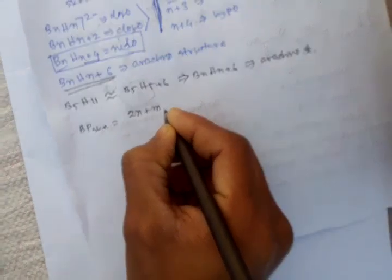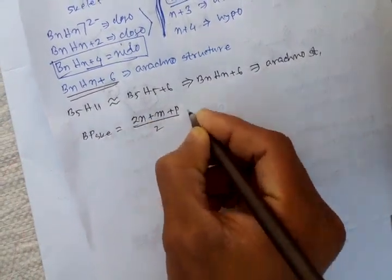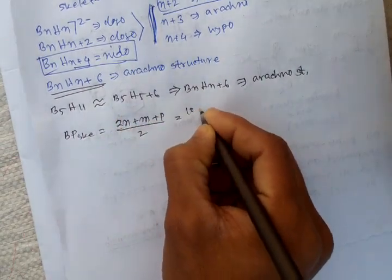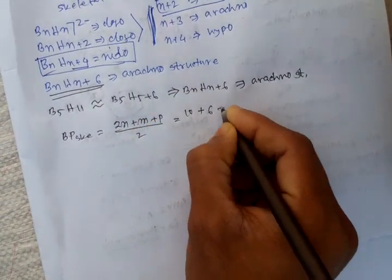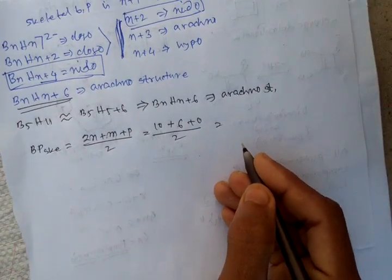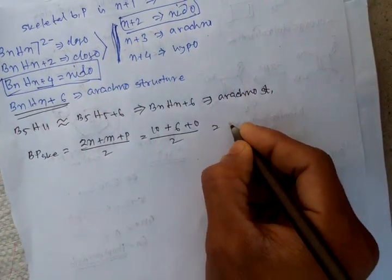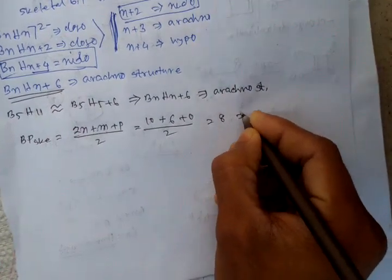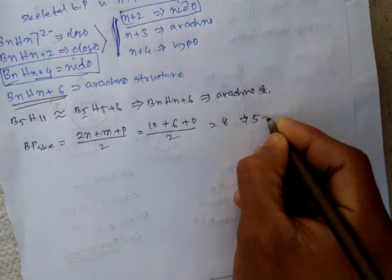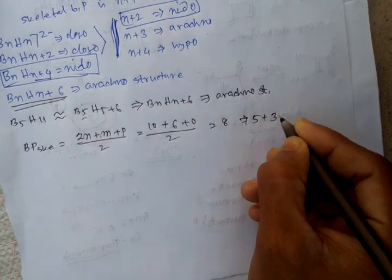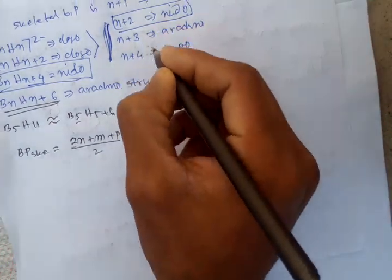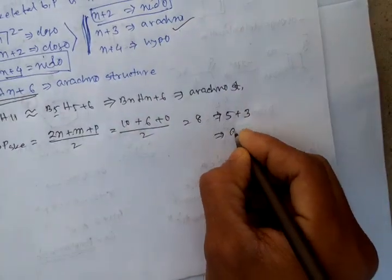Using the skeletal bond pair formula: (2n + m + p)/2 = (2×5 + 6 + 0)/2 = 8, which equals n+3 (since n=5, 5+3=8). So it is confirmed as an arachno structure.